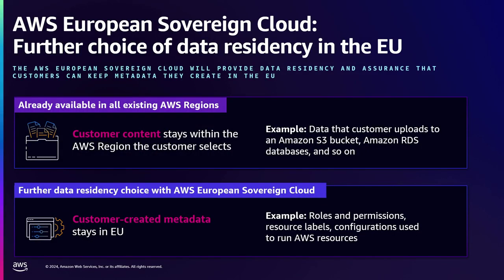Another characteristic is the enhanced data residency aspect. Today on AWS, customers already have control over their data — they know which regions they've selected to store their data and where they're creating EC2 instances. With European Sovereign Cloud, we've raised the bar. All the configuration customers set up to run their AWS resources — called customer-created metadata, such as IAM roles, policies, tags, and names — will also stay within this partition, the European Sovereign Cloud.